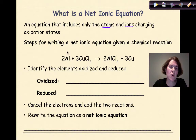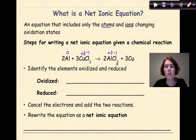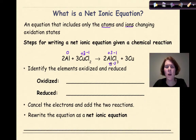Aluminum by itself is going to be zero. Copper, if I uncrisscross it, is going to be plus two. Chlorine is going to be minus one. Over on the product side, if I uncrisscross this, aluminum is going to be plus three. Chlorine is going to be minus one. I can check myself by saying minus one times three gives me minus three, and this is going to be plus three because there's an assumed one here, so that's got to equal zero. Then the copper by itself is going to be zero.